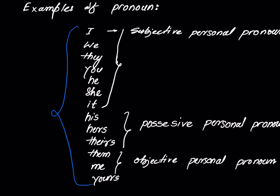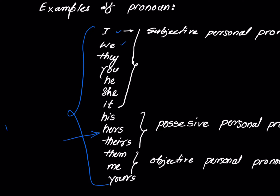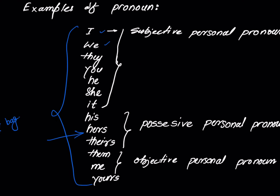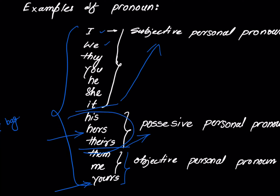There are many pronouns: I, we, they, you, he, she, it — these are subjective personal pronouns. His, hers, theirs, your, yours — these are possessive personal pronouns. And here we also have objective personal pronouns.